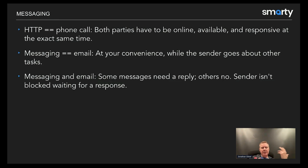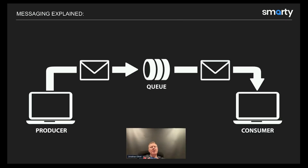In messaging we have two or three basic pieces: a producer that writes and sends messages, a queue — effectively a mailbox, usually a separate system altogether — and then at our convenience, the consumer, when it's ready for work, reads off the queue and processes the message.